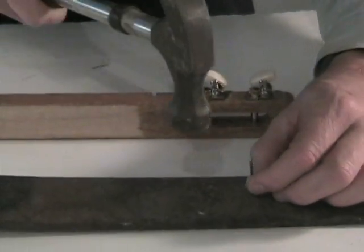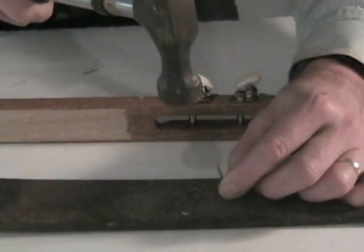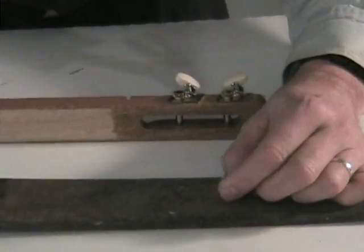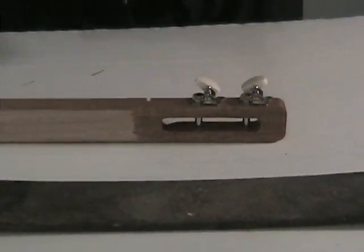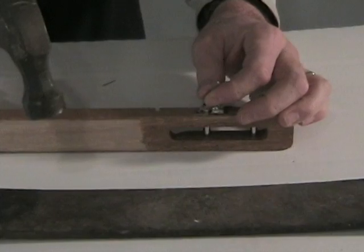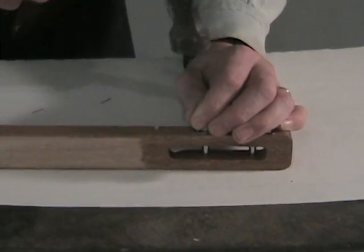I make a little punch out of a finishing nail by blunting its tip to make a starting hole for the screw. You can also make a starting hole with a 1/16th inch drill bit if you wish.